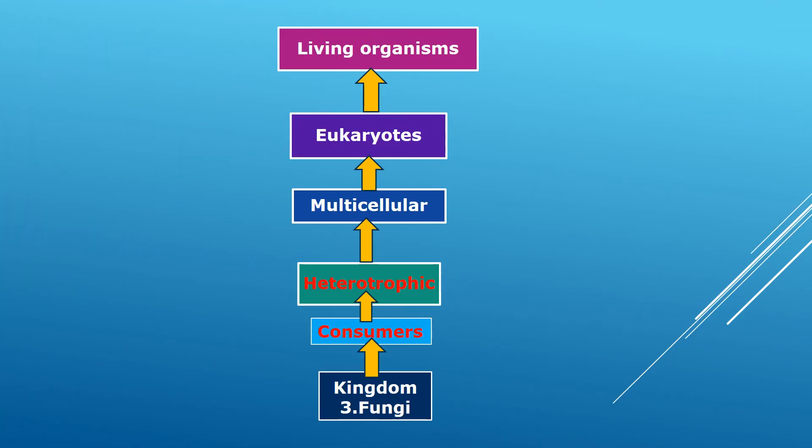In short, kingdom Fungi is a heterotrophic multicellular eukaryotic living organism. Heterotrophic means they do not prepare their own food and depend on other living organisms. Multicellular means containing more than one cell. Eukaryotic means having a nucleus with bound cell organelles and a complex structure.